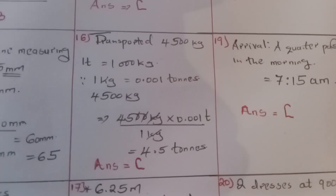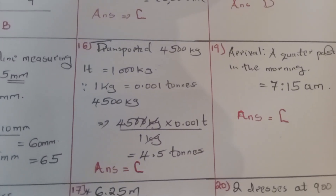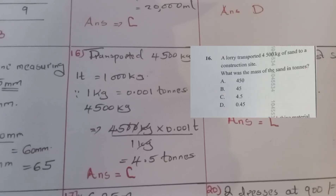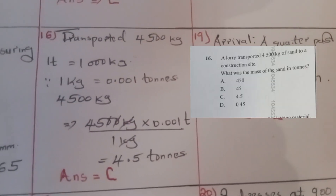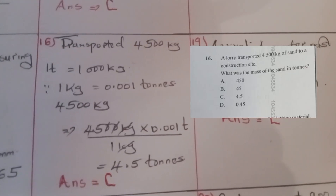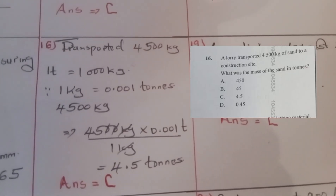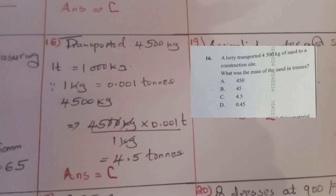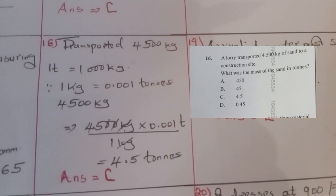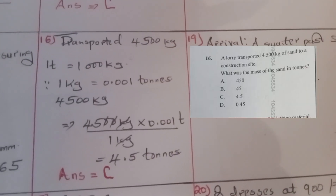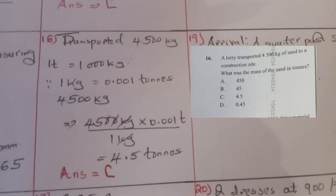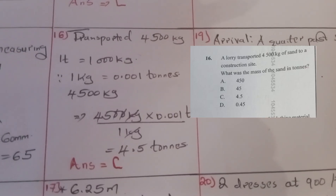Question sixteen: a lorry transported 4,500 kilograms of sand to a construction site. What was the mass of the sand in tons? We convert kilograms to tons — one ton equals 1,000 kilograms, so one kilogram equals 0.001 tons. Multiplying 4,500 by 0.001 gives 4.5 tons. The correct answer was C.